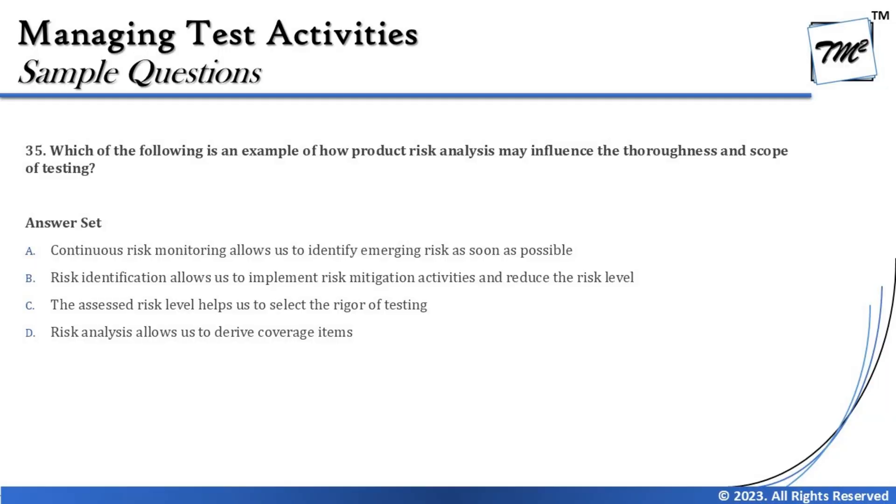After identification we conduct assessment — determining impact and likelihood — and based on that we determine the level of risk. Finally, having the risk level, we can discuss what to do for mitigation. So just quoting risk identification alone as influencing the thoroughness and scope of testing is not sufficient — risk assessment is also needed. Option C says the assessed risk level helps us to select the rigor of testing, meaning the amount and depth of testing to be conducted. Risk level comes from likelihood and impact, which are measured in risk assessment, and risk assessment cannot happen without identification.